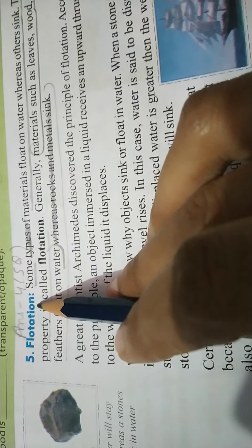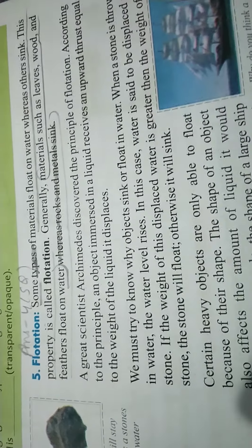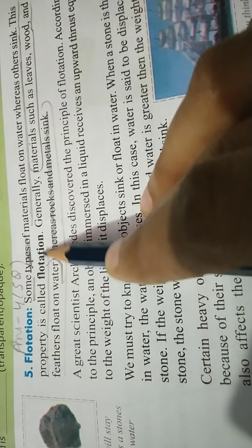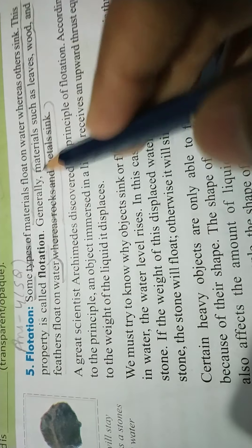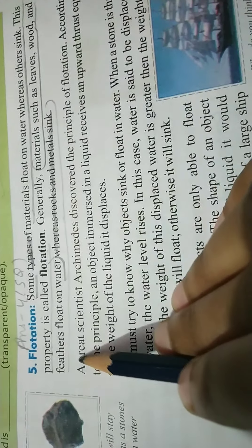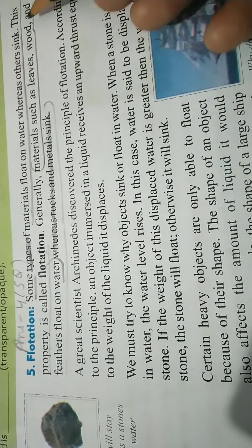Floatation means whether the object is floating or sinking. Some types of materials float on water whereas others sink. This property is called floatation. Generally, materials such as leaves, wood, and feathers float on water.